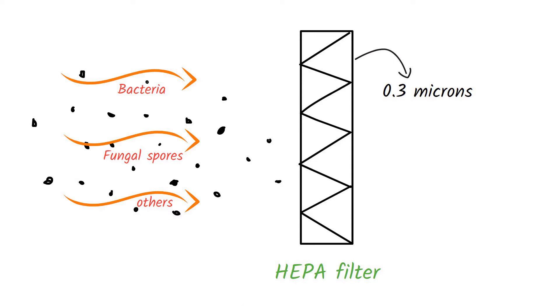HEPA filters are so constructed that the air reaching out to the filter is passed through two more filters in order to remove the particles that are larger than 0.3 microns.